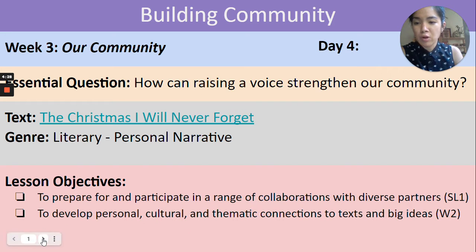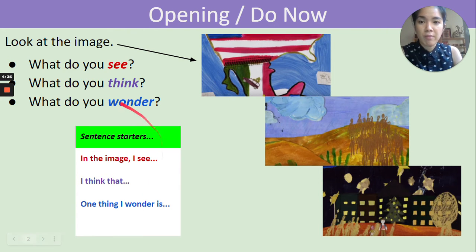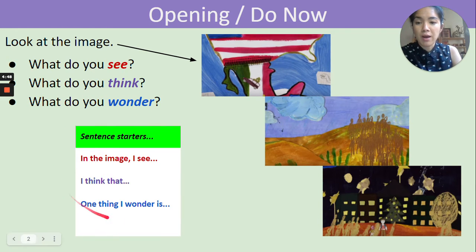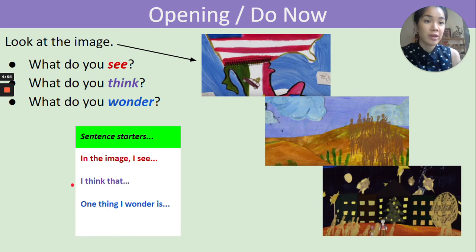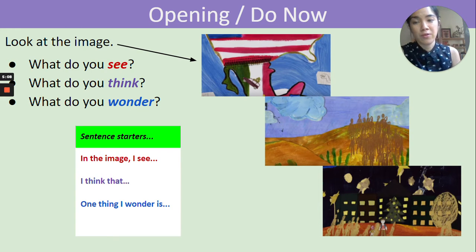So let's go ahead and do a quick overview of the opening and do now activity. Teachers, you can pause the video and facilitate this as you'd like. Students, as a reminder, you're going to look at the images here and consider the prompts: what do you see, what do you think, and what do you wonder? You have in the green box some sentence starters to help you formulate your thoughts. Depending on how teachers would like to do this, you could write into the chat, unmute and speak, or write out your ideas in a separate document. So teachers, go ahead, pause this video, give students some time to do the opening and do now, and when we return we will begin the before the reading activity.